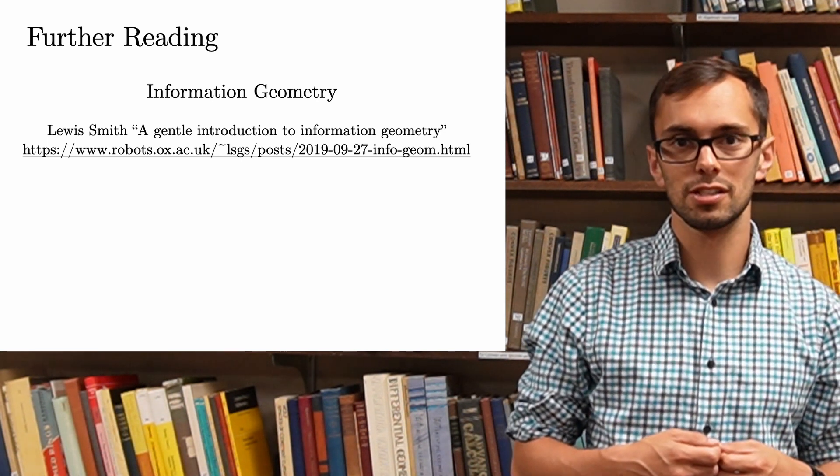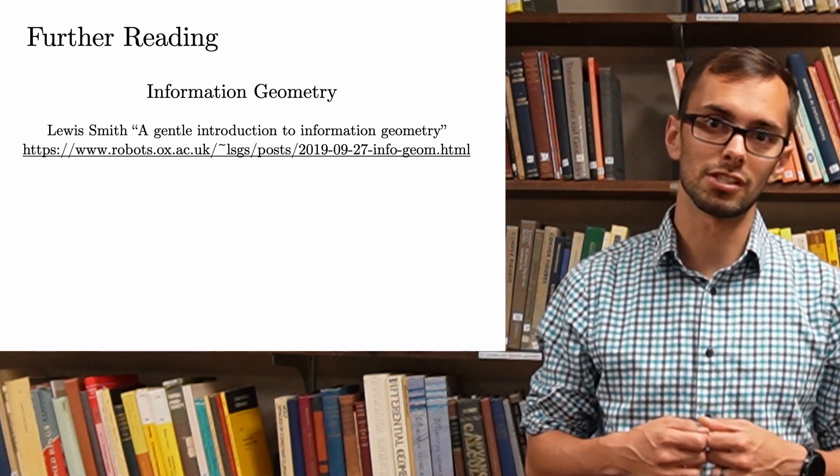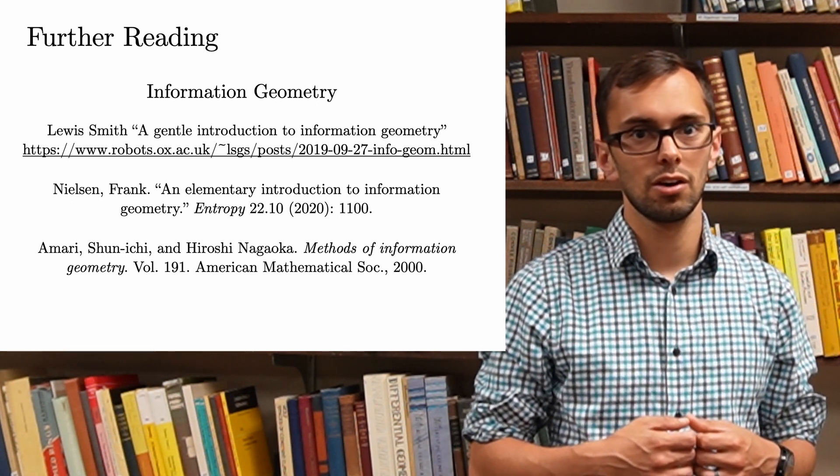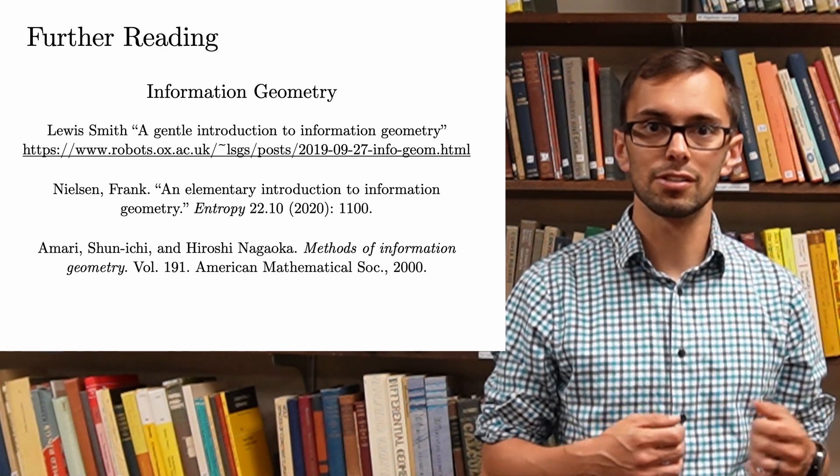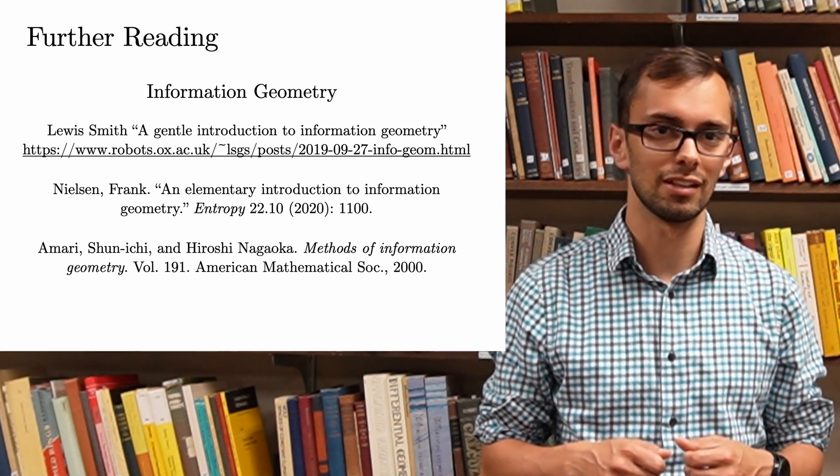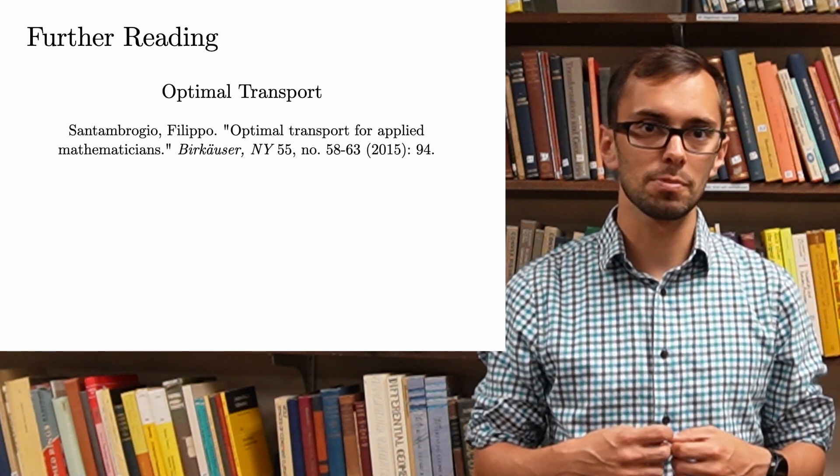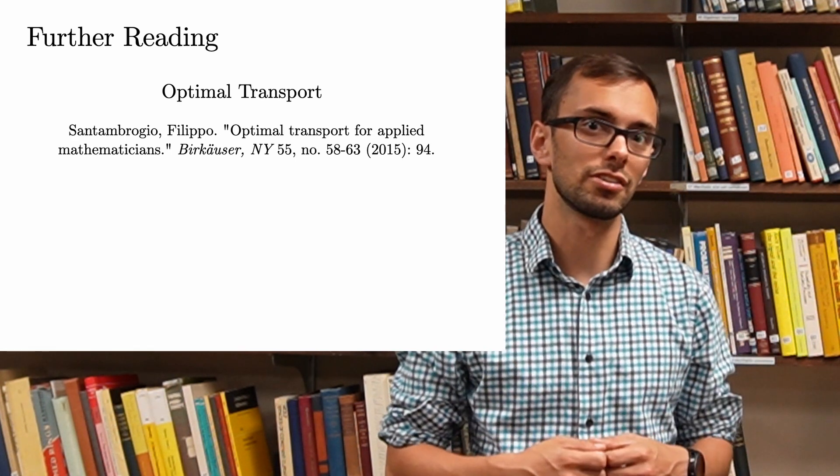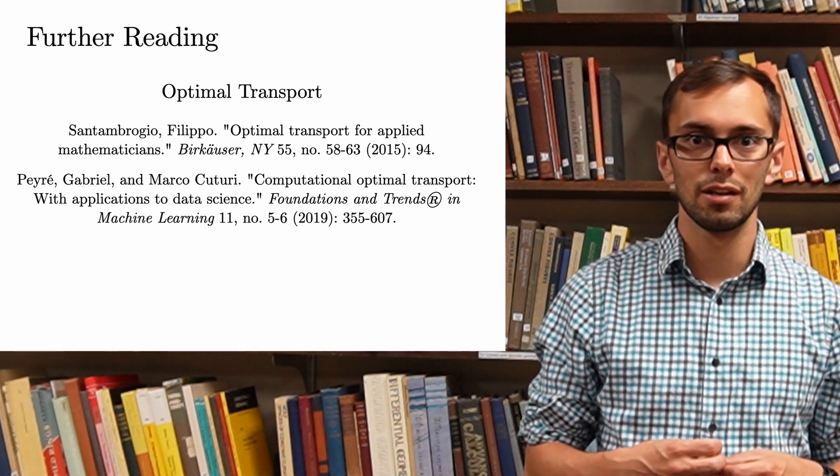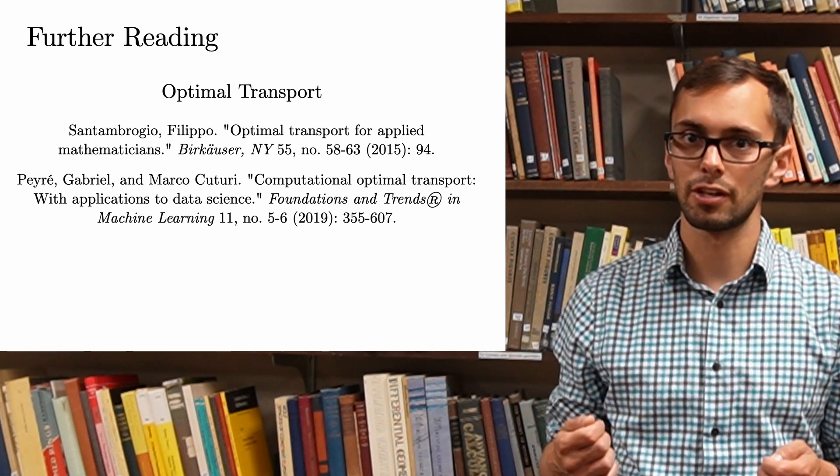For your first introduction to information geometry, I'd recommend Louisa Smith's blog post, A Gentle Introduction to Information Geometry. From there, either Frank Nielsen's An Elementary Introduction to Information Geometry, or Amari-Nagaoka's Methods of Information Geometry, are worth reading. Although I'd recommend having a differential geometry textbook handy as well. For optimal transport, Filippo Santambrogio's text, Optimal Transport for Applied Mathematicians, is an excellent introduction, which doesn't assume too much background. I've already mentioned Computational Optimal Transport, but this is a really great book, especially for numerical questions and putting optimal transport into practice.